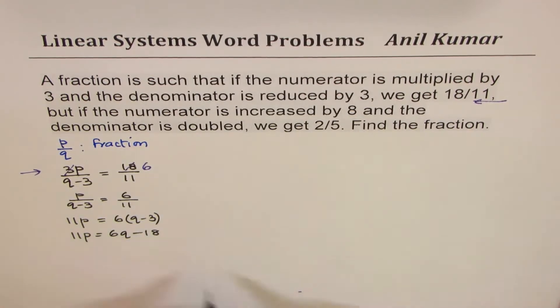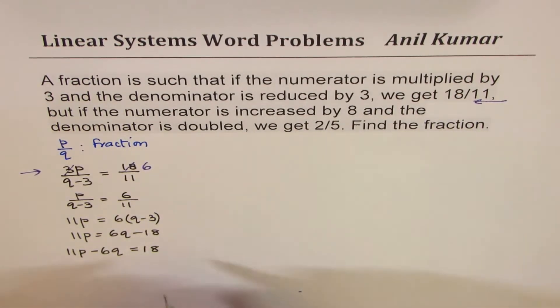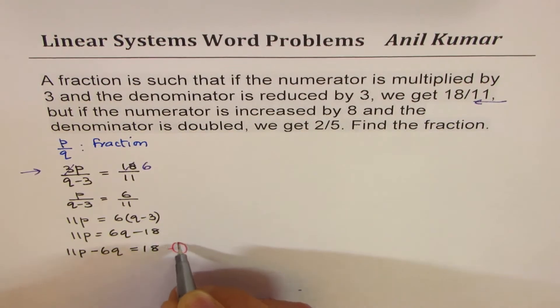Let's write the variables together, constant on the other side. So we can say 11p minus 6q equals to minus 18. So we got simplified version of our equation. So this is equation number one.